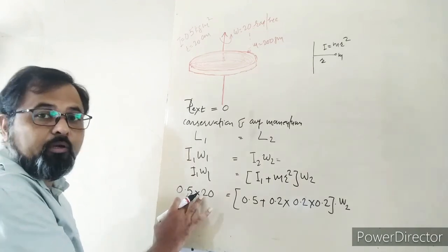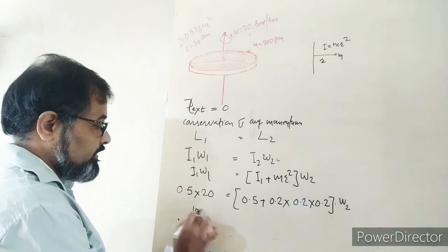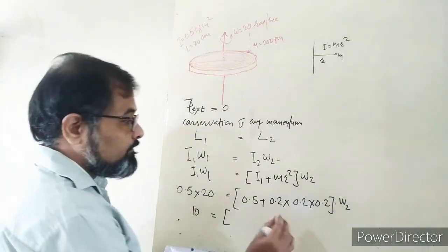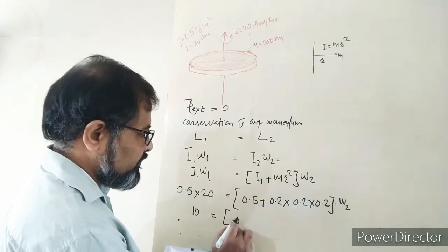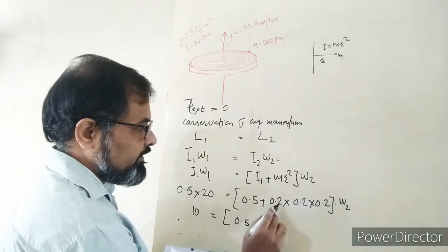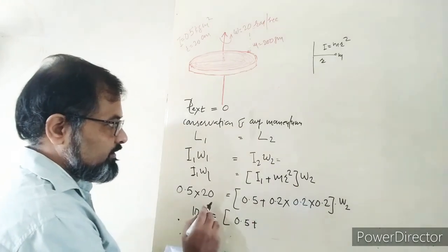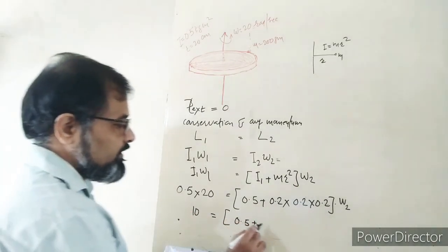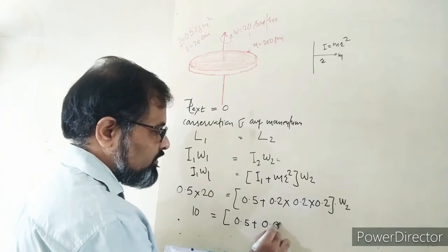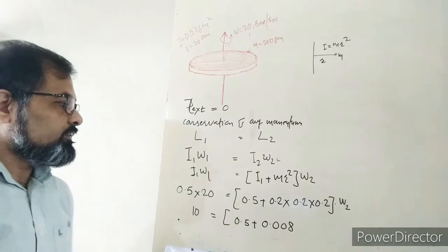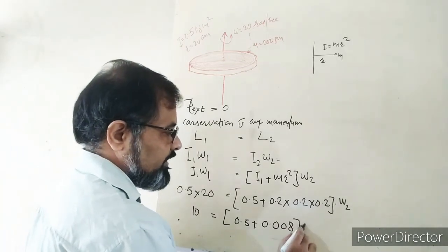The radius is 20 centimeter which is 0.2 meter. Let me do the addition: 0.5 plus 0.2 times 0.2 squared which is 0.008.